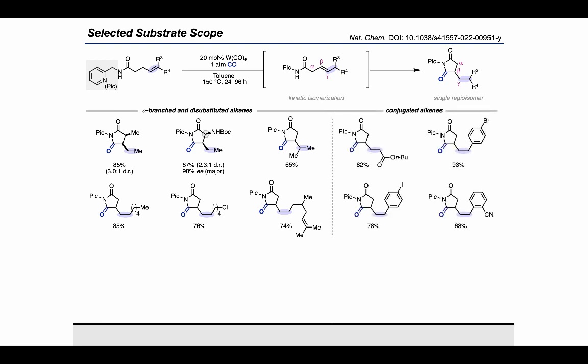Next, we wanted to extend our protocol to classes of alkenes which have been historically challenging in the chain-walking literature. First, we targeted those that required thermodynamically uphill isomerization which we believed could be compensated for by a highly exergonic carbonylation step. We were pleased to find that Michael acceptors and styrenes possessing valuable functional groups including iodides, bromides, and nitriles could undergo deconjugative isomerization to give the desired carbonylated product as a single regioisomer.